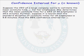In this problem, we will construct a confidence interval for the population mean mu when the population standard deviation sigma is known. Suppose the CEO of a large company wants to estimate the mean commute time mu for her employees. She determines that the mean commute time for a simple random sample of 40 employees is 25.6 minutes. It is known that the standard deviation of commute times for all employees is 5.5 minutes. We are to find a 95% confidence interval for mu.